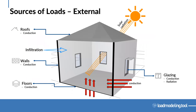Looking at those loads themselves — sources of loads externally. Conduction is going to be one of the major ones. All the surfaces of our building will have some form of conduction, which is just the transfer of heat through a surface adjacent to two different temperatures. Heat will always travel from higher to lower, so in winter when it's colder outside, heat will leave the building. In summer when it's hotter outside, heat will enter the building through conduction.